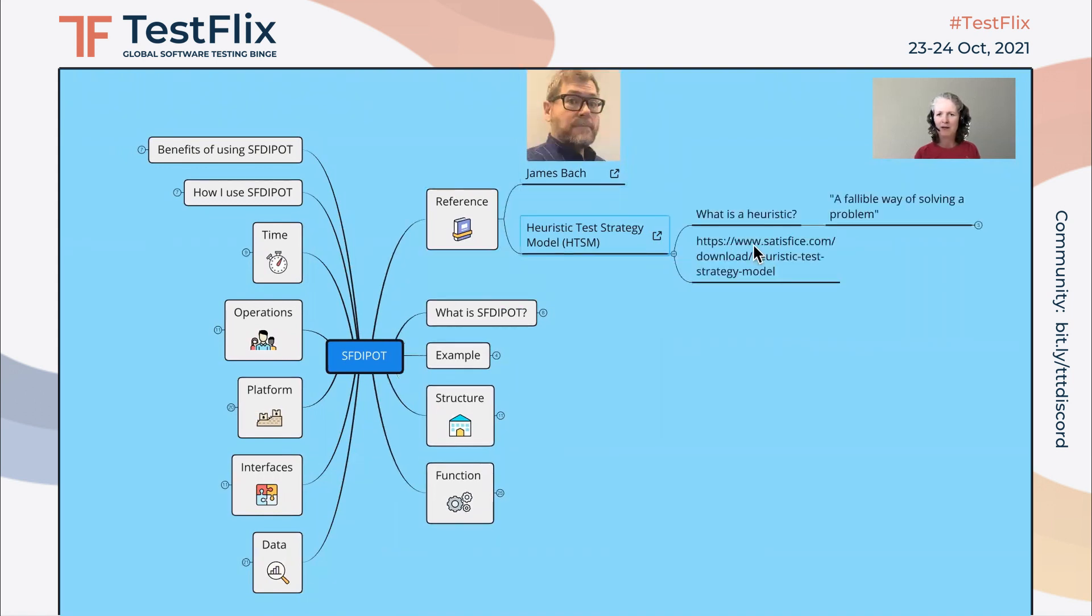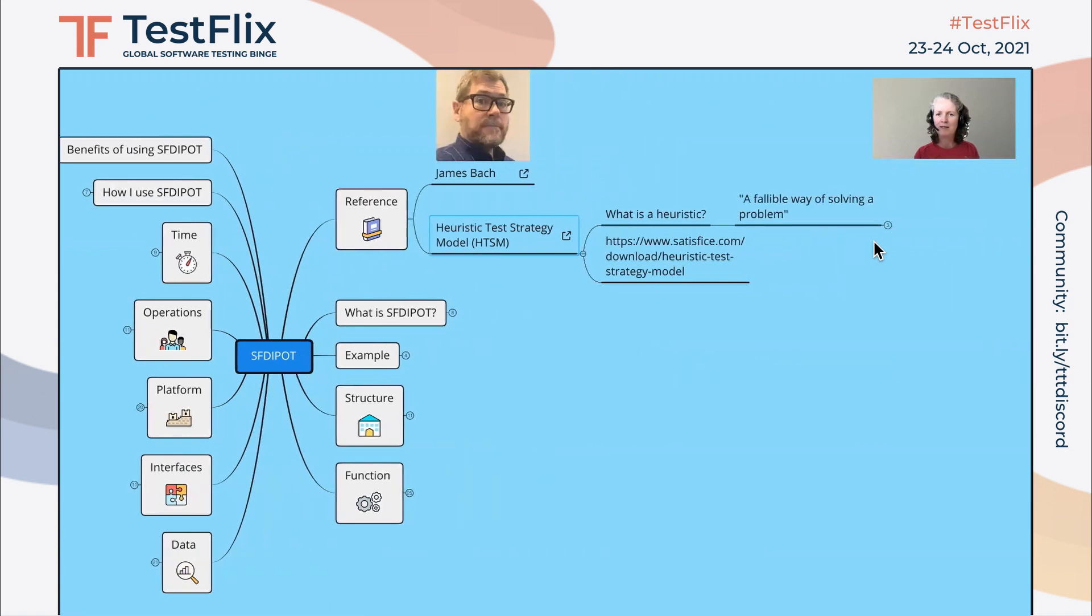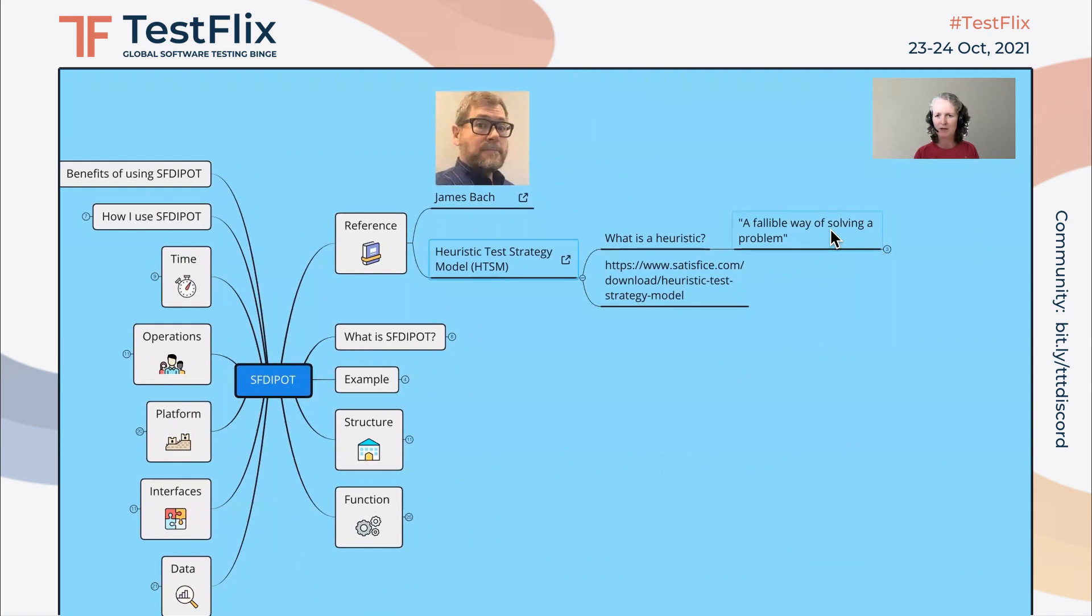So what's a heuristic? James defined a heuristic as a fallible way of solving a problem. Fallible means it can fail, so it may or may not solve your problem. You need to choose your heuristics wisely and use them with skill in order to solve your problems.